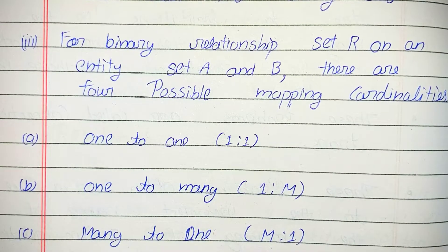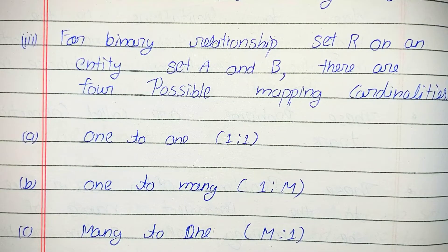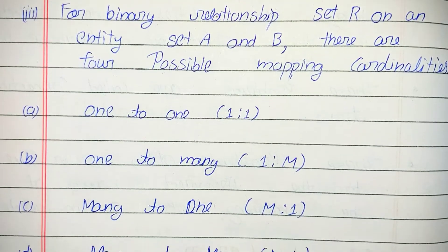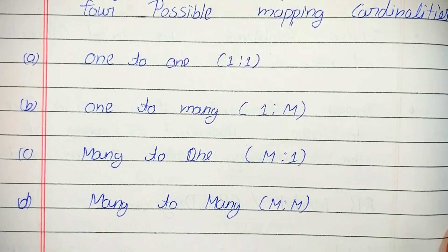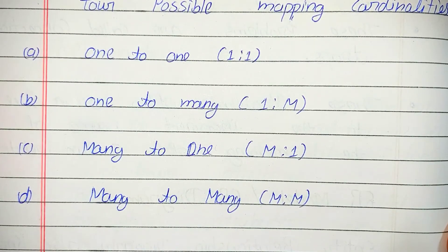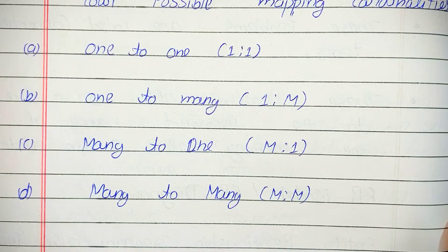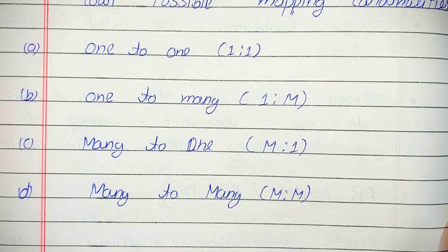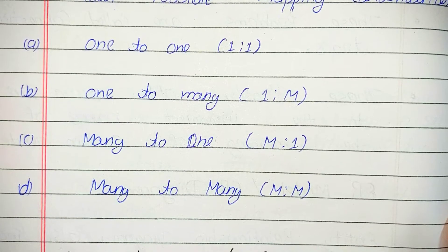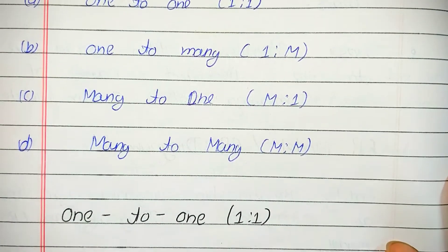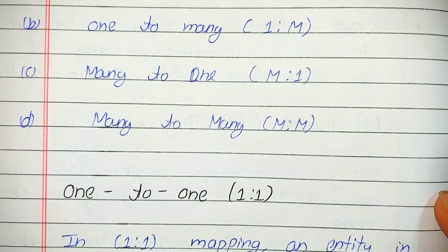The four types are: one to one, one to many, many to one, and many to many. Let us discuss the first one — one to one.